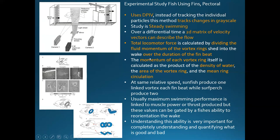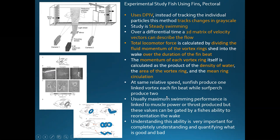The second experimental study uses the same PIV technique but slightly more advanced — instead of tracking individual particles it tracks grayscale to make a 2D matrix of velocities. To calculate total force, they take the momentum of the vortex rings coming out from the fish, and the force required to create those vortices must be the force pushing the fish forward, similar to the previous study.